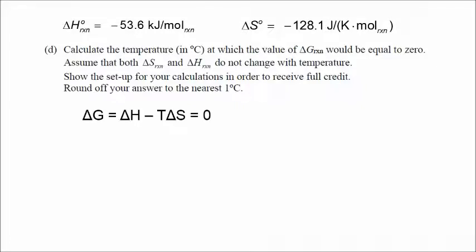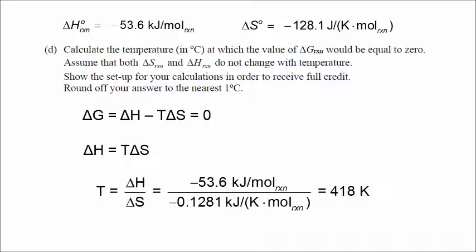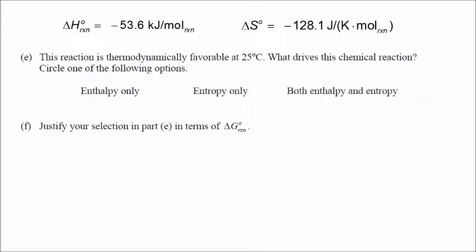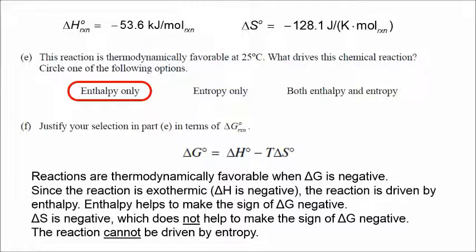The temperature at which delta G equals zero: dividing delta H by delta S, watching units carefully, gives 418 Kelvin — or 145 degrees Celsius. For the last part — with a negative delta H and negative delta S, is this reaction driven by enthalpy, entropy, or both? It is driven by enthalpy only. Since the reaction is exothermic, the negative delta H helps make delta G negative. However, the negative delta S does not help make delta G negative, so the reaction cannot be driven by entropy.